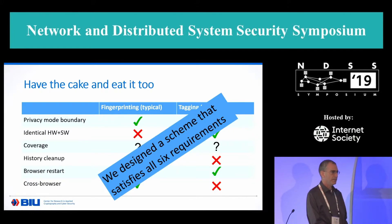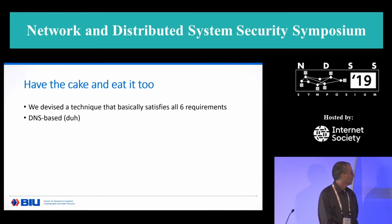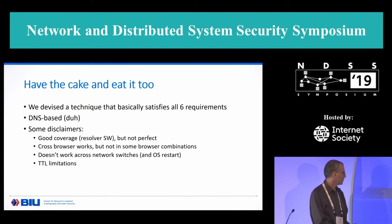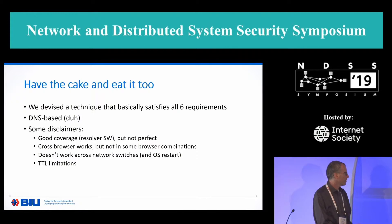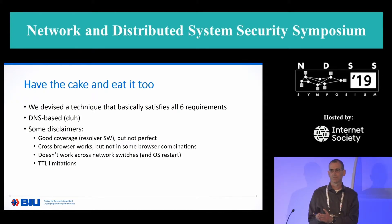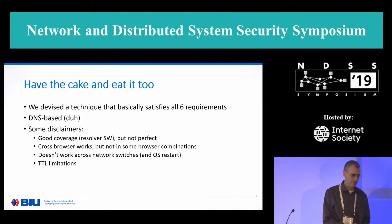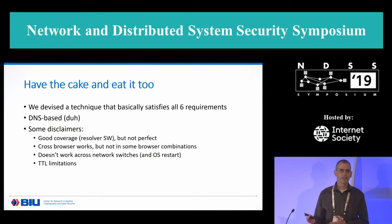We designed a technique that is able to address each and every one of those six properties. Of course, it's DNS-based — no surprise here. And while it does address all six requirements, we do have some disclaimers. It has good coverage, but it's not perfect. It works across browsers, but some combinations are exceptions. It doesn't work across network switches — if you are hooked to one Wi-Fi and then move to a different Wi-Fi, cellular network, or university network, the ID gets wiped out. And it has TTL limitations — time-to-live limitations imposed by resolvers and stub resolvers — which practically means that the longevity of the identifier is limited to typically somewhere between six hours and seven days.